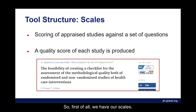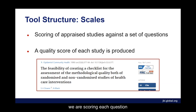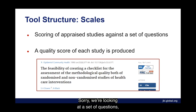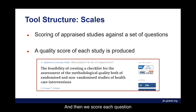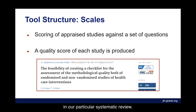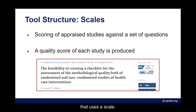First, we have scales. When critical appraisal is performed using a scale, we look at a set of questions and score each from 0 to 2, based on safeguards the study has implemented to minimize risk of bias. We then produce a quantitative quality score for each study appraised. An example is the Downs and Black checklist, which uses a scale.